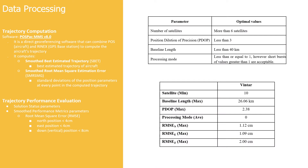Once all data were at hand — both the LiDAR data and the validation data — processing was started. This phase involved three stages: trajectory computation, LiDAR point cloud processing, and DEM editing and hydro correction. The first stage computed the aircraft's trajectory throughout the entire flight. The trajectory was then smoothed through software and the best estimated trajectory was evaluated by computing the RMSE, or Root Mean Square Error.